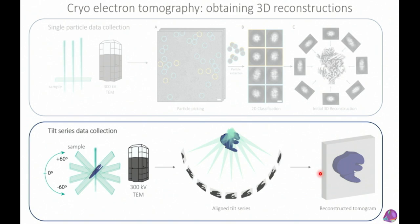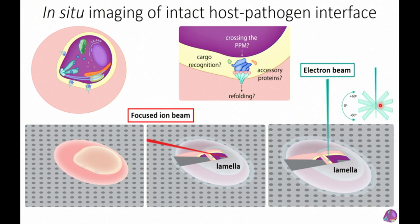In practice, we take parasite-infected red blood cells directly — without breaking them open — preserving cellular context. We freeze them on an EM grid, then use a focused ion beam scanning electron microscope (FIB-SEM) to ablate the cell material above and below our area of interest, one atom at a time. There are no cutting artifacts, no fixation or dehydration artifacts — it's as close to native as possible.